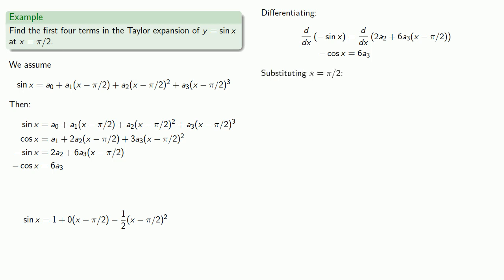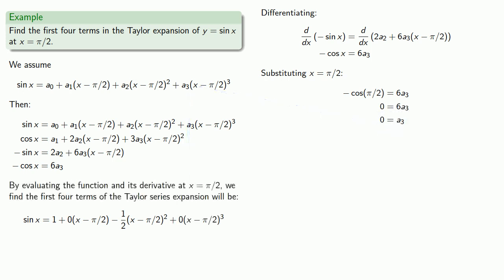And so by evaluating the function and its derivatives at x equals π over 2, we find the first four terms of our Taylor series expansion.